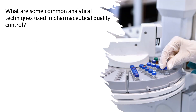Now we will discuss the common analytical techniques used in quality control laboratories. Pharmaceutical QC laboratories employ a variety of analytical techniques to assess the purity, safety and efficacy of pharmaceutical products. The first is HPLC — High Performance Liquid Chromatography — a versatile technique used for the separation, identification and quantification of pharmaceutical compounds. It is commonly used to analyze APIs, impurities, degradation products, assay and related substances.